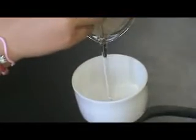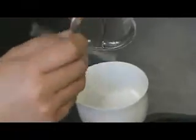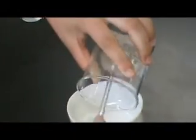Pour the contents slowly into the center of the filter paper using a stirring rod to help guide the mixture. When all the liquid has been filtered through, try to scrape as much of the precipitate into the funnel as you can.